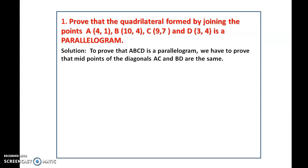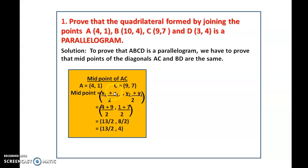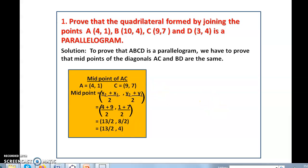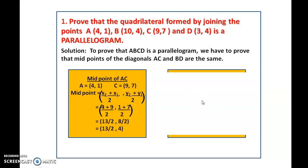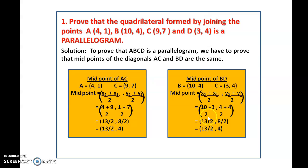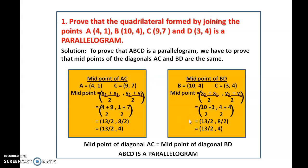Let us calculate the midpoint of diagonal AC using (x1 + x2)/2, (y1 + y2)/2: that gives (9 + 4)/2 = 13/2, and (1 + 7)/2 = 8/2 = 4. Now the midpoint of diagonal BD: (10 + 3)/2 = 13/2, and (4 + 4)/2 = 8/2 = 4. Both diagonals have the same midpoint (13/2, 4). Since the midpoints of diagonals AC and BD are equal, ABCD is a parallelogram.